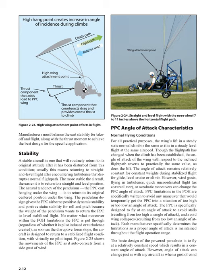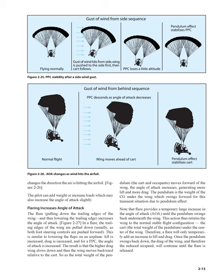PPC limitations in the POH are specifically written to avoid any maneuver that would temporarily get the PPC into too high or too low an angle of attack. The PPC is specifically designed to fly at an angle of attack to avoid stalls — resulting from too high an angle of attack — and avoid wing collapses — resulting from too low an angle of attack. Each manufacturer specifically determines the limitations so a proper angle of attack is maintained throughout the flight operation range. The basic design of the powered parachute is to fly at a relatively constant speed, resulting in a constant angle of attack. However, angle of attack can change, as when a gust of wind changes the direction the air is hitting the airfoil. The pilot can add weight or increase loads, which may also increase the angle of attack slightly.